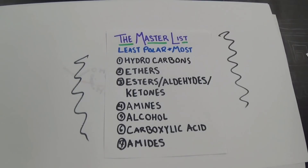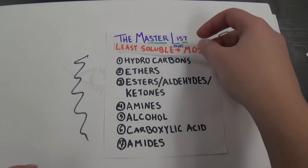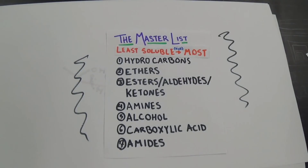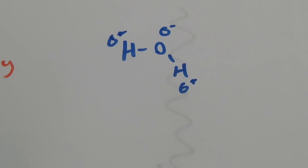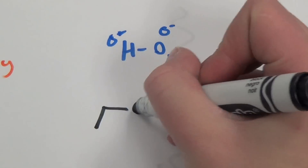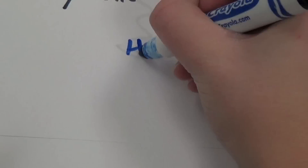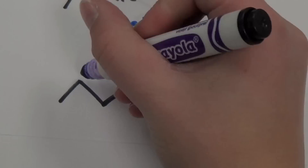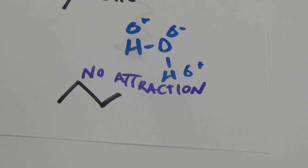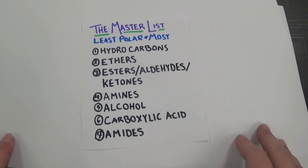Here's another fun fact: if we change the title of the list to 'least soluble in water to most soluble in water,' the list will once again remain the same. This is because water is polar and like dissolves like. The slightly negative charge on water's oxygen atom will pull at the slightly positive atoms in the functional groups, dissolving those with high polarity far more easily than molecules where charge is evenly distributed.